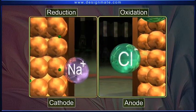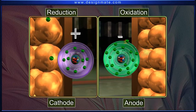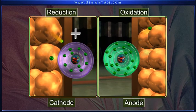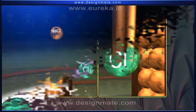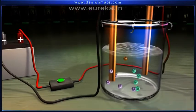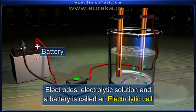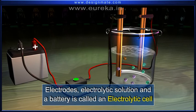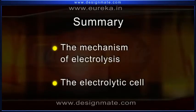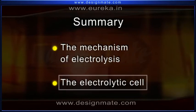Reduction and oxidation take place simultaneously at the cathode and anode respectively during electrolysis. The complete assembly containing electrodes, electrolytic solution, and a battery is called an electrolytic cell. Thus, we have learnt about: 1. the mechanism of electrolysis, and 2. the electrolytic cell.